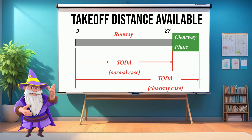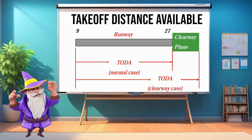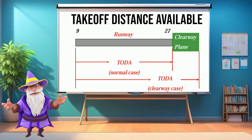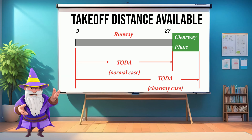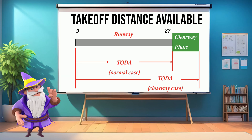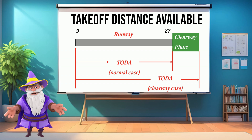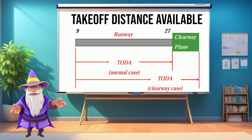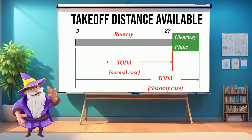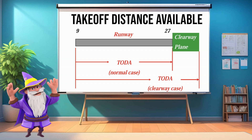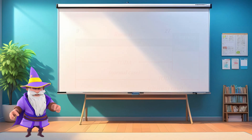Here's an important detail: even though TODA is a longer distance than TORA, pilots cannot plan to rotate beyond the runway. Aircraft must always be airborne by the end of TORA. TODA only provides additional room for initial climb.